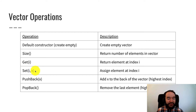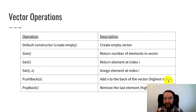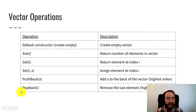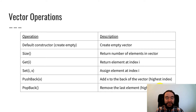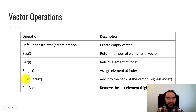Set index i to value x is like an assignment into an array subscript. Pushback x adds x to the back of the vector, so x becomes the highest index — that increases the size by one, a capability that arrays do not have. Popback is the opposite of pushback: it removes the last element, whichever element is at the highest index. Arrays do not have that either. We're using C++ library terminology: push to add to the back and pop to remove.